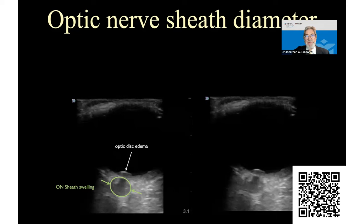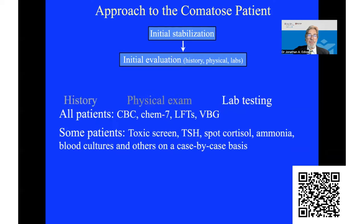With the ophthalmoscope you may sometimes see a subhyaloid hemorrhage, which is often a sign of a subarachnoid hemorrhage or some other pathology that rapidly increases intracranial pressure.